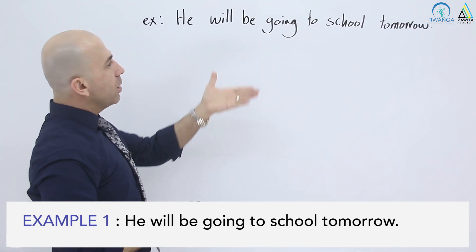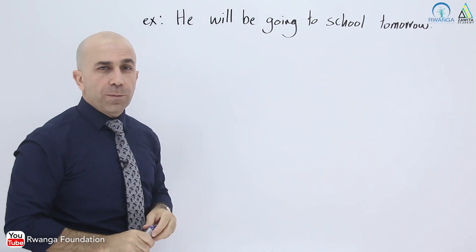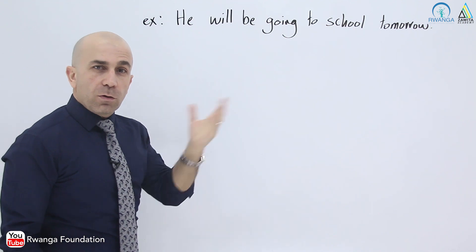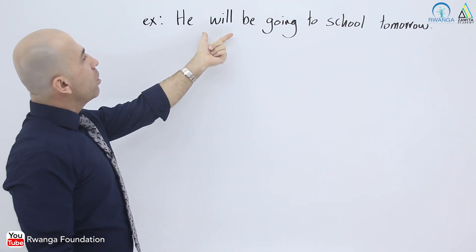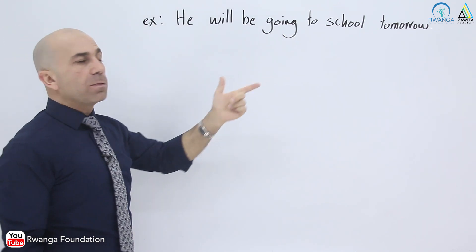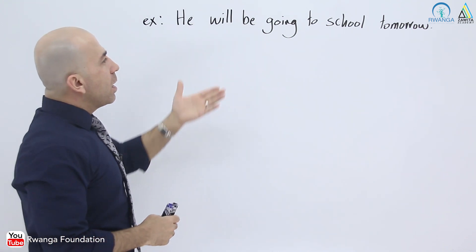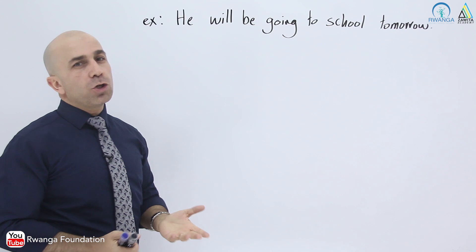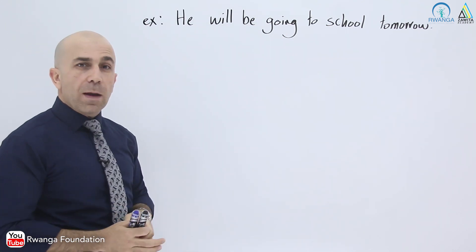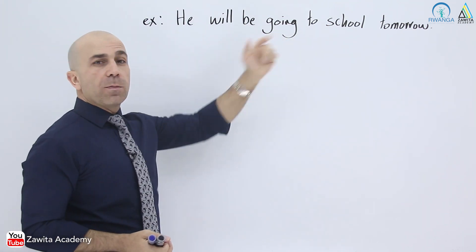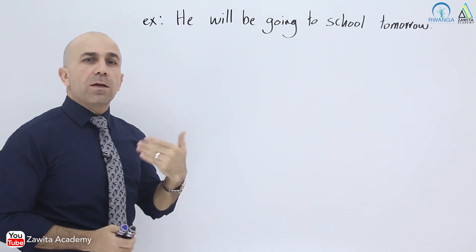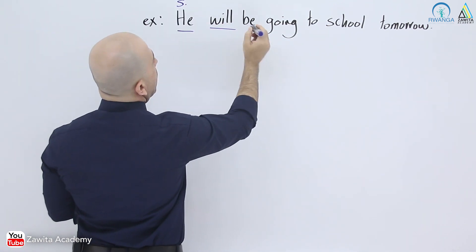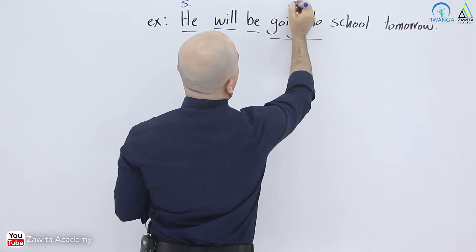So this is our example: he will be going to school tomorrow. How do we know this is future continuous? Here is the subject, then will, then be, then the verb with -ing added — going — and the complement. The word tomorrow is our future time marker.